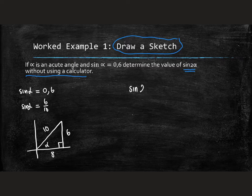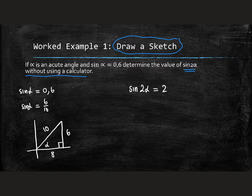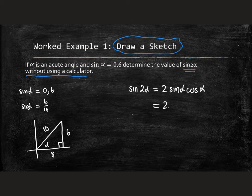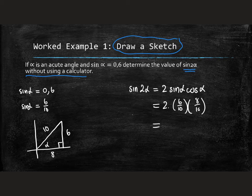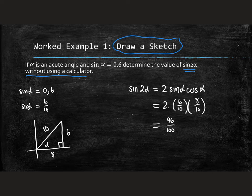If I take sin of 2α, sin of 2α is 2 times sin α cos α. I know what sin α is. Sin α is 6 over 10. And cos α I can read off from my new triangle, which is 8 over 10. So what we get then is 2 times 6 over 10 times 8 over 10, which works out to 96 over 100, which is the same as 0.96.